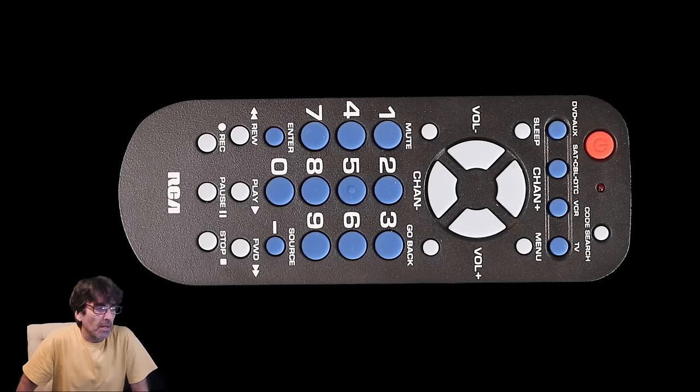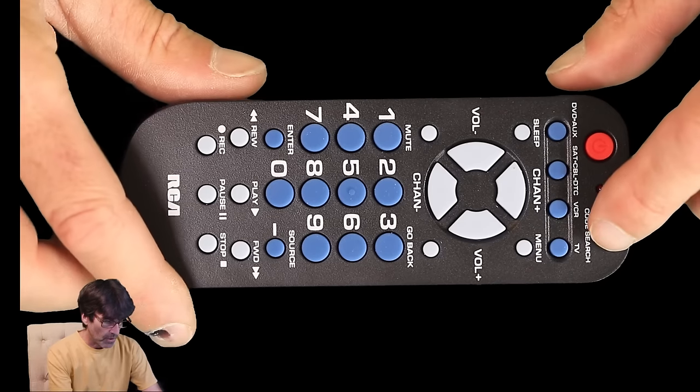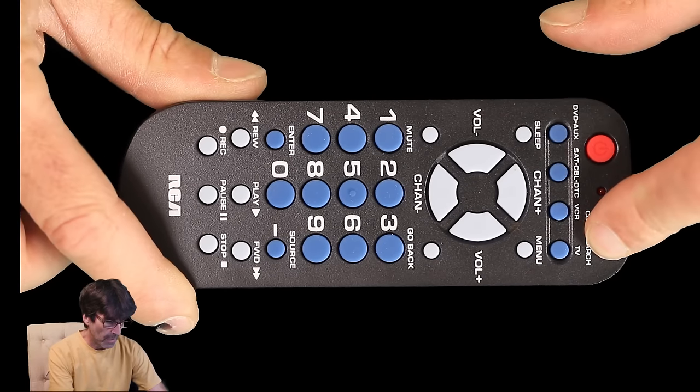So the TV is working fine. So let's test a DVD now. So to program, once again, push the code search button until the red light comes on.